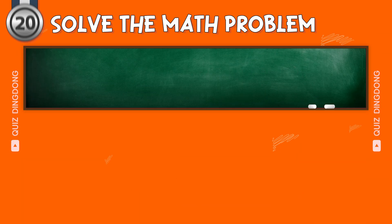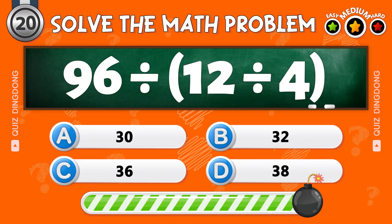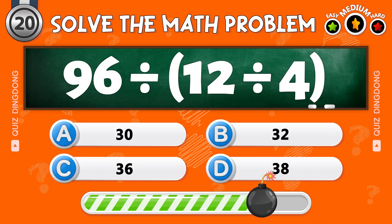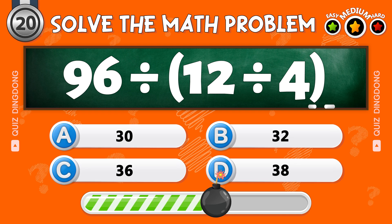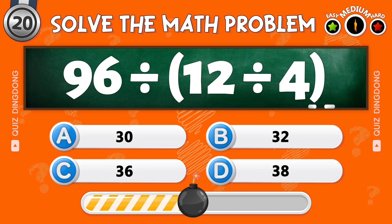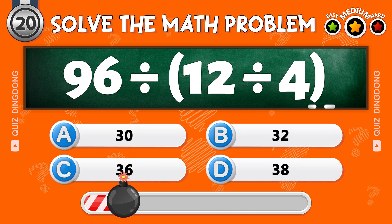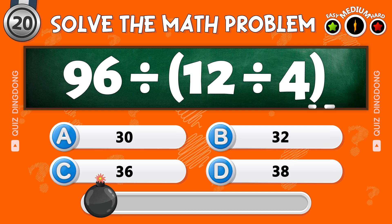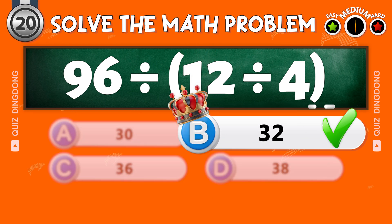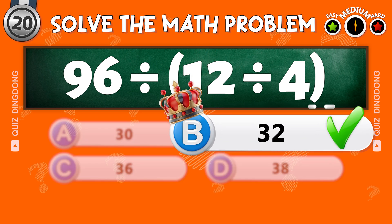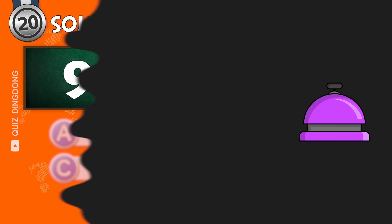Last one for this level! Solve this! What's 96 divided by 12 divided by 4? Awesome! The answer is 32! Nice work! You've finished the medium level! Let's move on to the hard level!